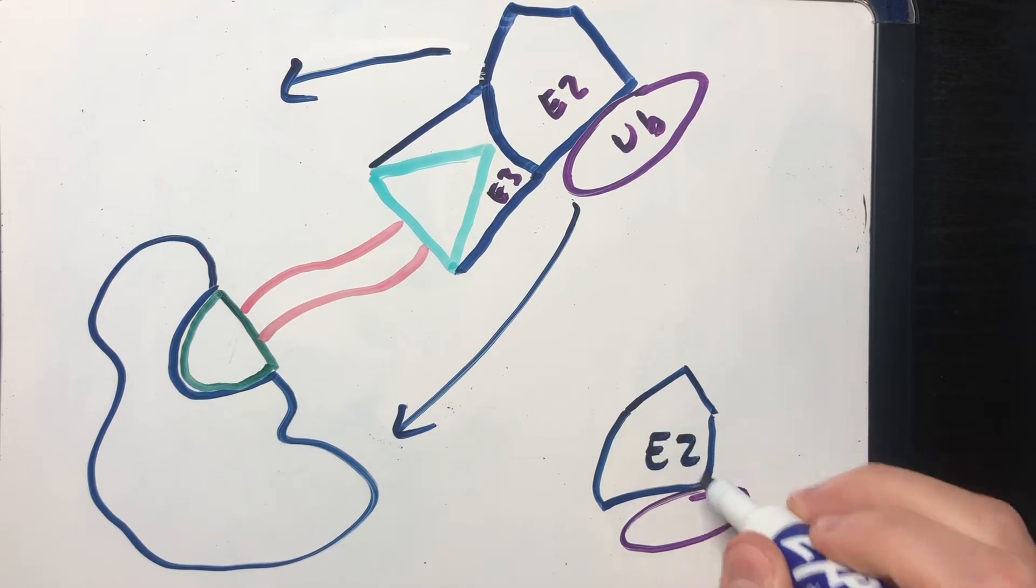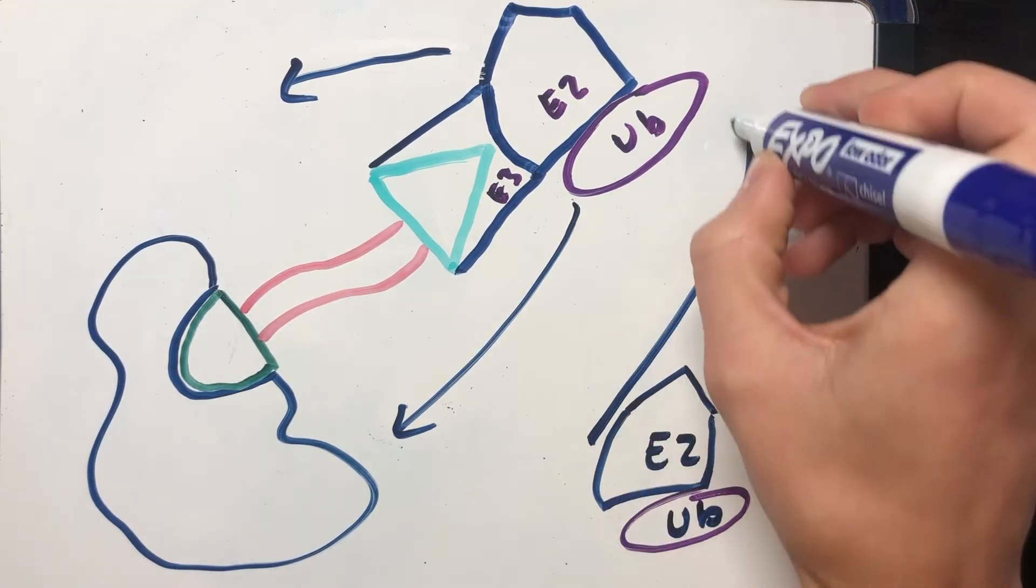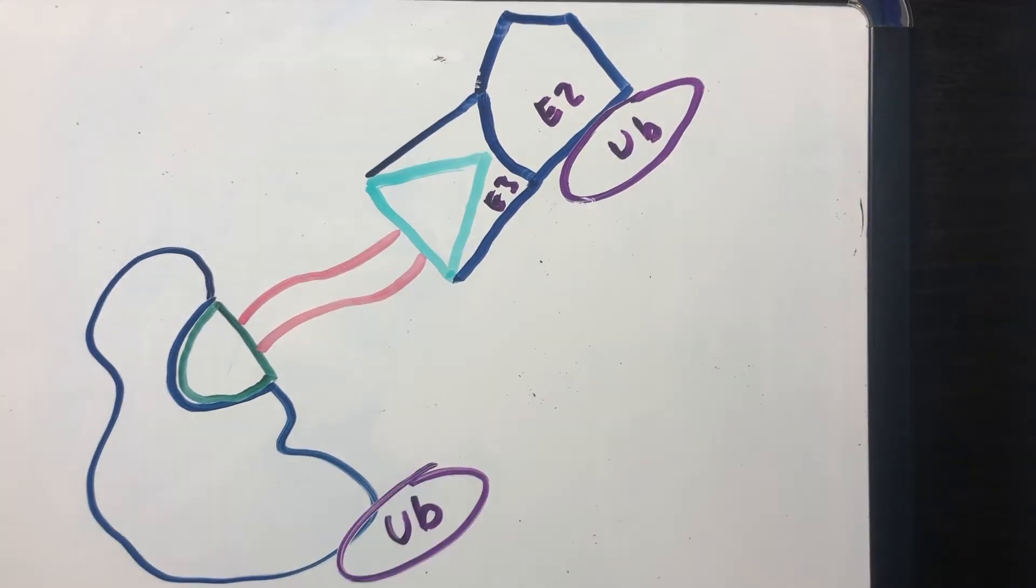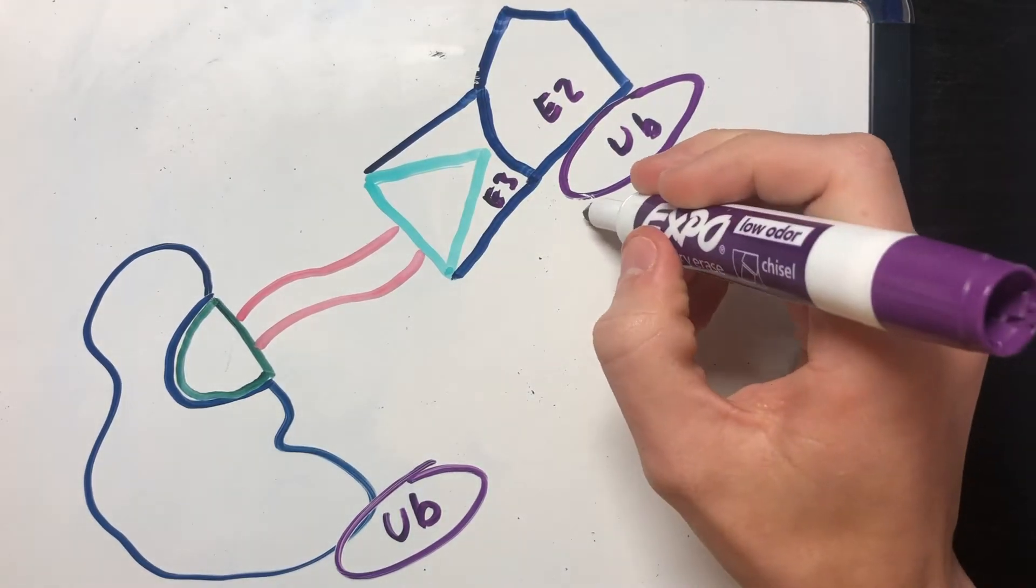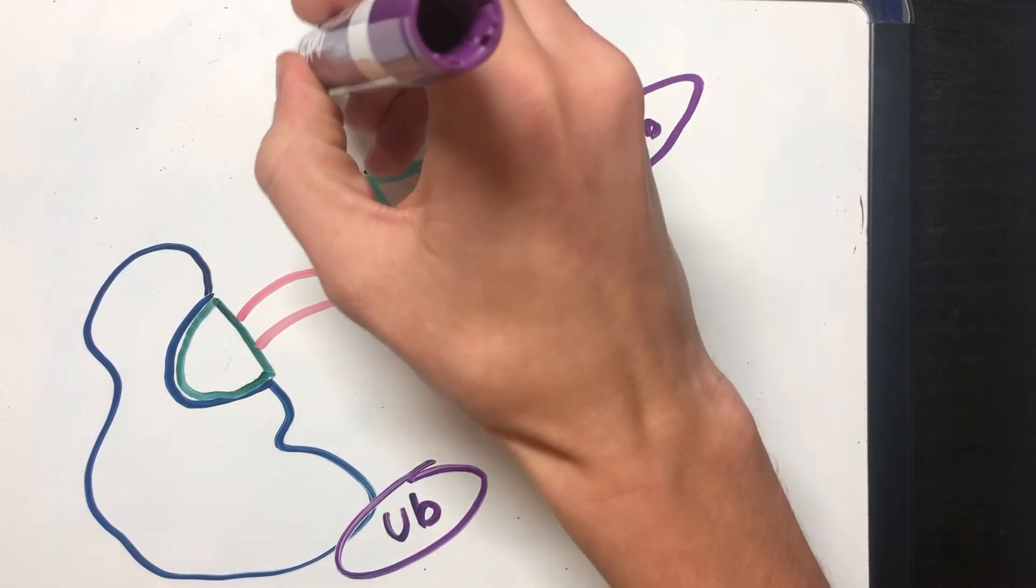Following the dissociation, an empty void is filled with another E2 ubiquitin ligase. A similar process ensues where the target protein is once again ubiquitinated and the E2 ligase dissociates.